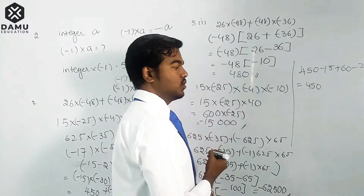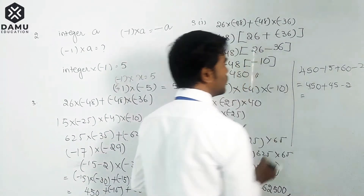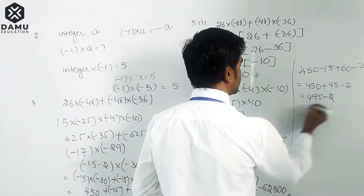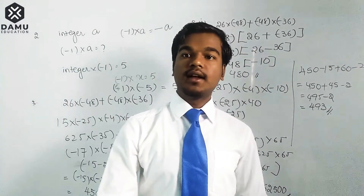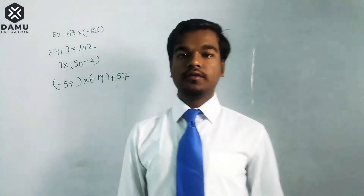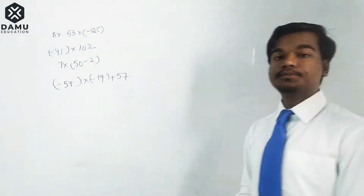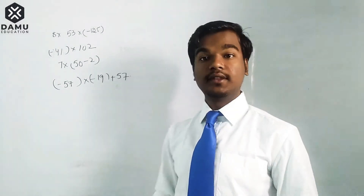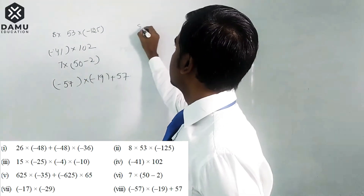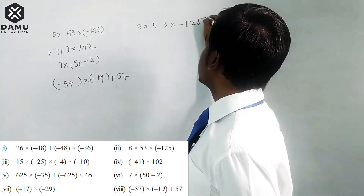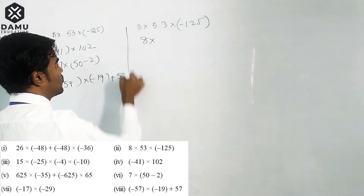So plus 45 means 495 minus 2 gives 493. The answer is 493. Thanks for watching this video, please subscribe and click the bell icon. Continuing with remaining solutions: the next question is 1853 into minus 125. We write 125 in a simplified format, and 53 can be written as 50 plus 3.